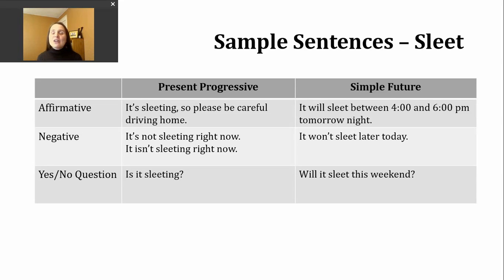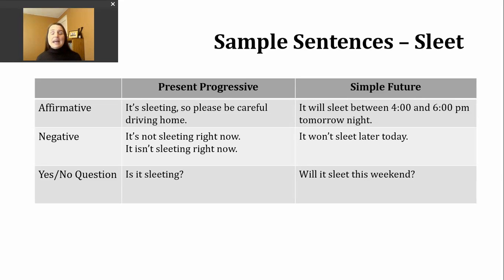In all of these verb tense examples that we're doing, much like yesterday, our subject is going to be 'it,' and 'it' is referring to the weather. This is how you're most likely going to hear these verbs used. You're not going to really hear it paired with any other subject. So if you're wondering why all the subjects are 'it,' it's because I'm referring to the weather.